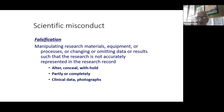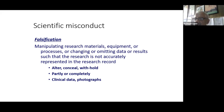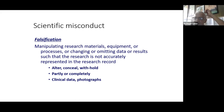Falsification is when you manipulate research materials, equipment, or processes, or change or omit data or results such that your research is not accurately represented in the research record — which finally is your scientific paper. You could alter data, conceal data, or withhold data because giving it out would invalidate your conclusions. You could do this partly or completely, with data and also with images, which has been of concern over the past decade.